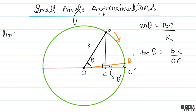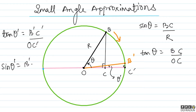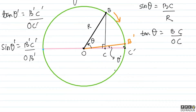Now kids, here is one more approximation. You can see that B'C' being very small means OB' is almost equal to OC'. So OB' ≈ OC'. As C approaches C', it looks like OC' is almost equal to the radius of the circle.